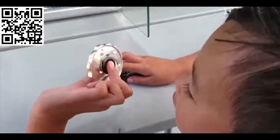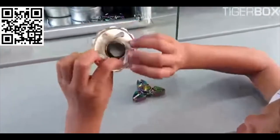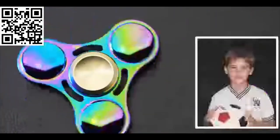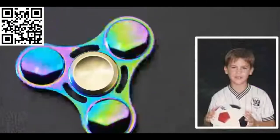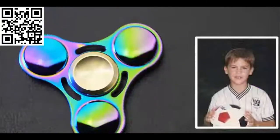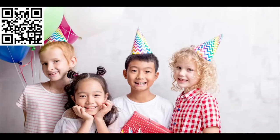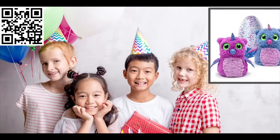The fidget spinner is a great example. This became one of the most popular toys in the year 2017. But when I was growing up as a kid in the 1980s, fidget spinners didn't even exist. That's because they hadn't been invented yet. For every generation of children, there are new toys that get invented. Toys that the adults in their lives didn't have when they were kids.